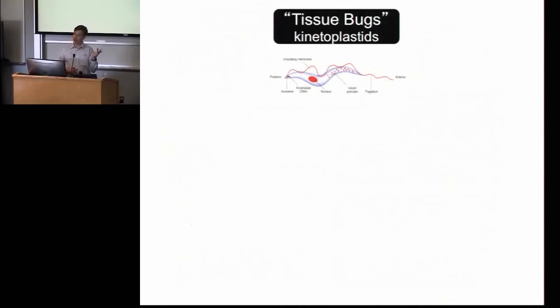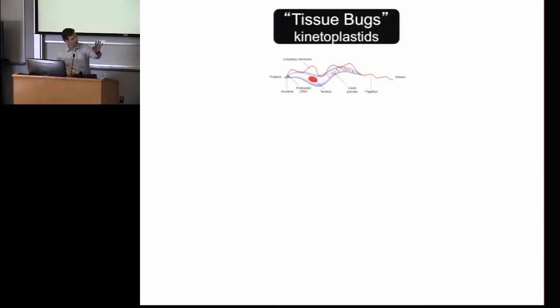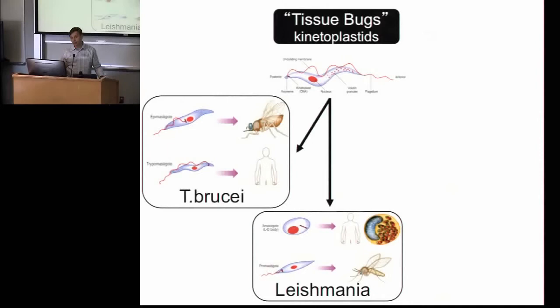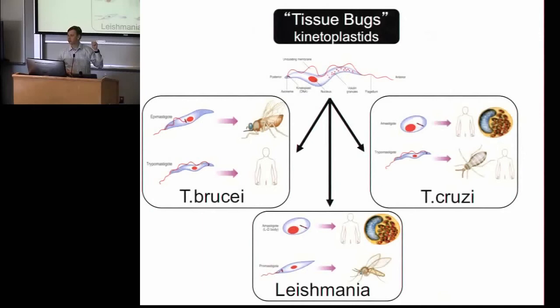The tissue bugs are the kinetoplastids, and they all look the same: one cell, a nucleus, and a kinetoplast. The kinetoplast is probably a rudimentary chloroplast — going back to when one animal ate a plant and instead of digesting it, they started living together symbiotically. The kinetoplast is essentially the engine, like a mitochondrion, that drives a ruffled membrane coalescing into a big flagella. It looks kind of like a sperm — except instead of pushing itself, it pulls itself along. There are three broad flavors: Leishmania, Trypanosoma brucei, and Trypanosoma cruzi.